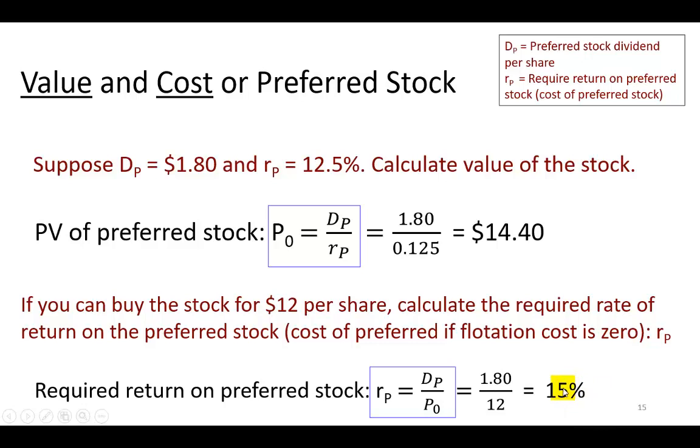This would be correct in the absence of any flotation cost, because all we do here is simply divide the dividend of $1.80 by the price of $12 to get 15%.